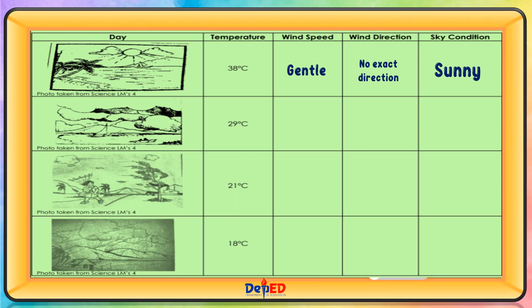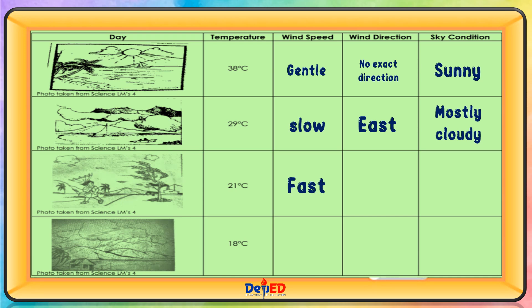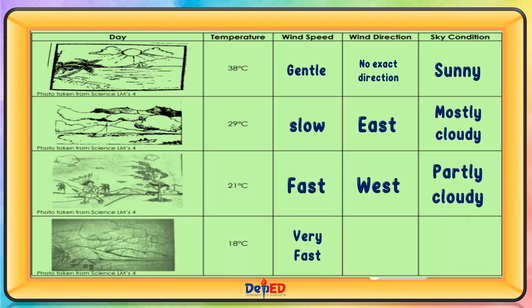Day 2: temperature, 29 degrees Celsius; wind speed, slow; wind direction, east; sky condition, mostly cloudy. Day 3: temperature, 21 degrees Celsius; wind speed, fast; wind direction, west; sky condition, partly cloudy. Day 4: temperature, 18 degrees Celsius; wind speed, very fast; wind direction, west; sky condition, cloudy or rainy.